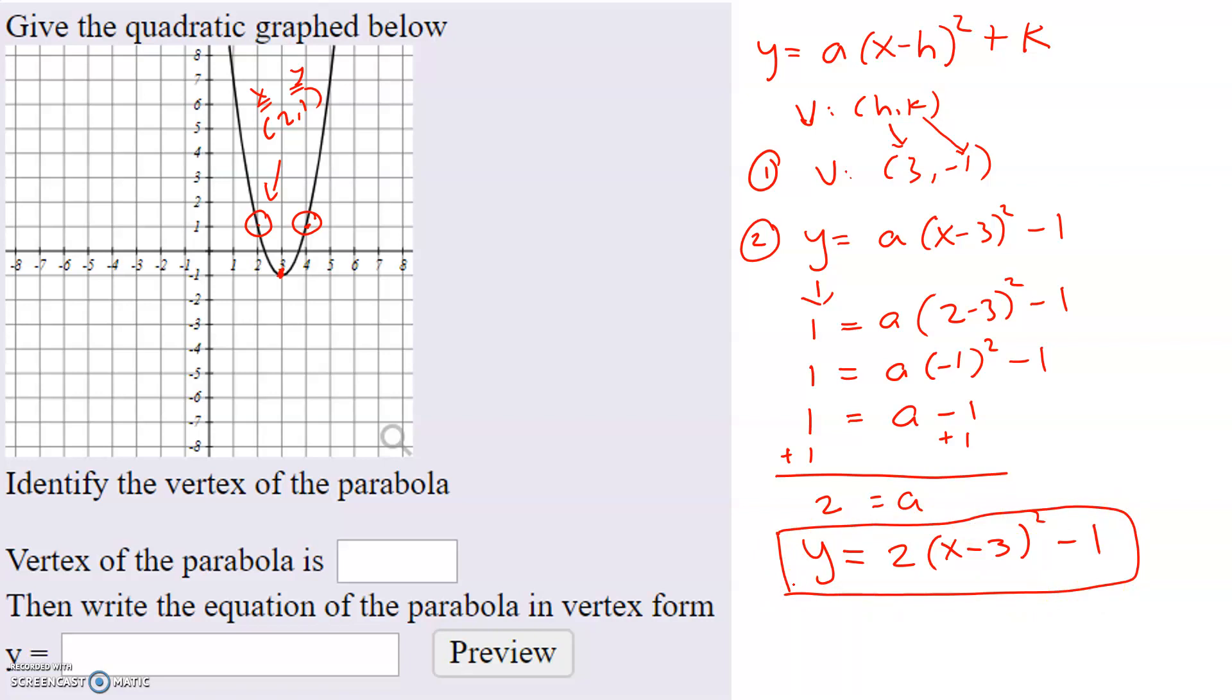And notice that if I had chosen the second point, which is 4 comma 1, I would get the exact same thing. So I'm going to work through that real quick. So instead of 2 minus 3, I would instead have 4 minus 3. Remember, the x value is 4, but the y value is 1. That doesn't change.